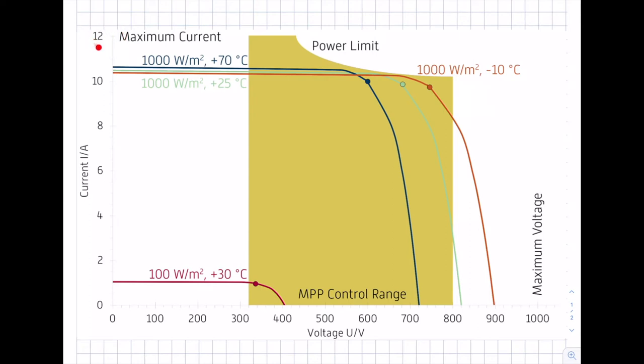This value depends on the type of inverter, while the maximum voltage is typically independent of the inverter type. There is also a third limit: a power limit. The inverter cannot handle unlimited power. The number of modules determines the power of your PV generator, and you have to select the correct power rating for your inverter.